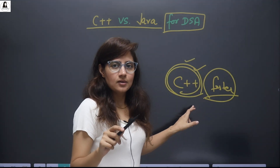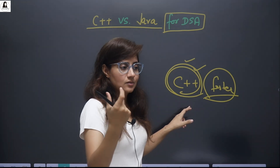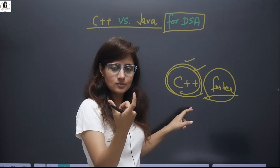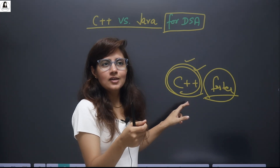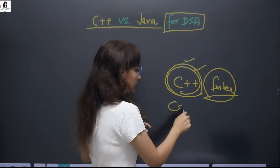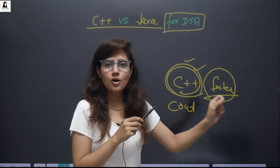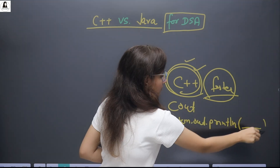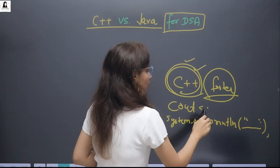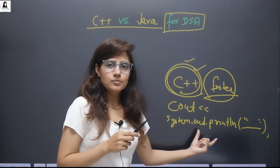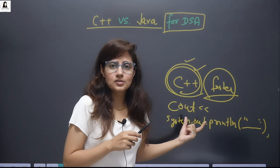C++ is the fastest, Python is the slowest, and Java is in between. It's not that you cannot do CP in Python or Java — many do prefer Python or Java for CP — but the preferred language for CP is C++ because of its faster execution. Also, the syntax is shorter: in C++ you just write 'cout', whereas in Java you have to write 'System.out.println'. Because of this shorter syntax, many also prefer C++ for CP.